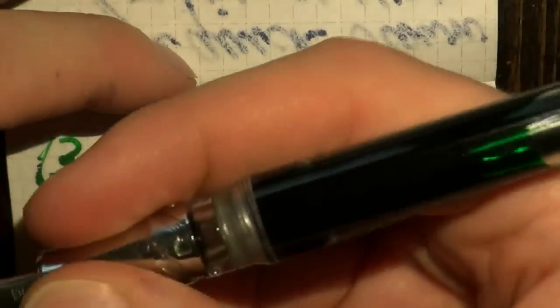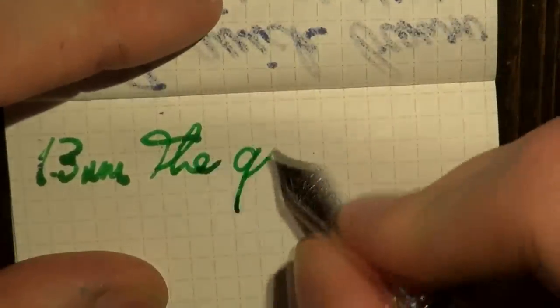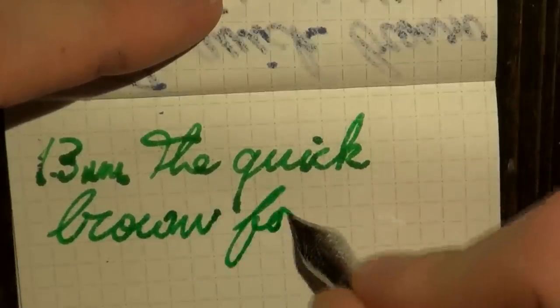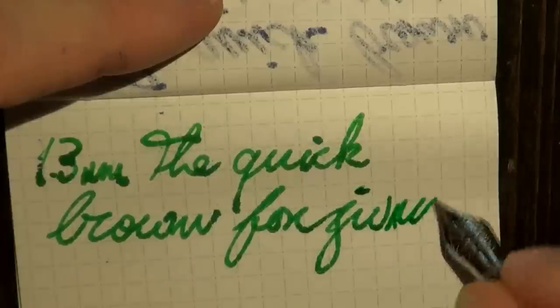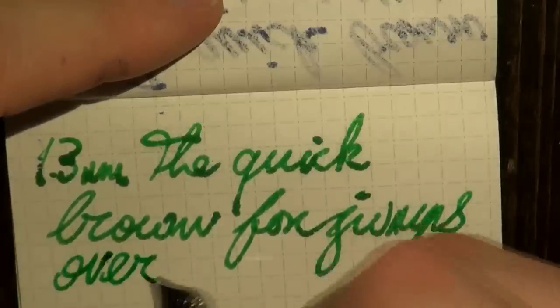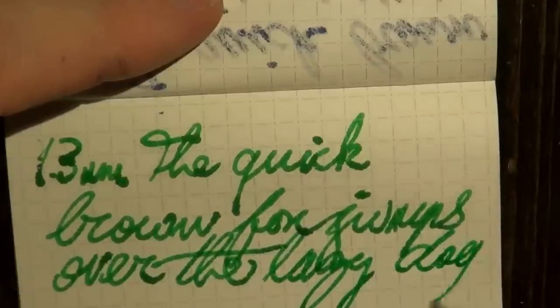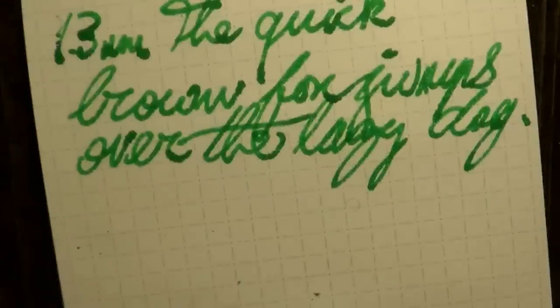I thought the last things we would do is use a stub. This is a 1.3 millimeter stub with a Diamine Apple Glory in a Visconti Opera Crystal. Now we have the stub area covered as well. Apple Glory is a nice vibrant green ink.